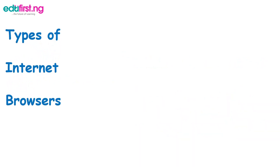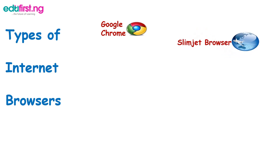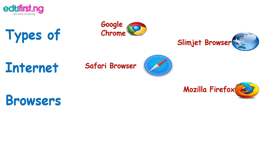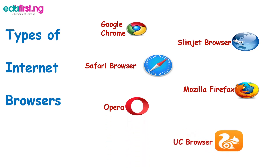We have types of Internet Browsers. We have Google Chrome, Slim Jets, Safari, Mozilla Firefox which is very popular, Opera, and UC Browser — UC stands for Universal Control Browser, which emanated from China. We also have Internet Explorer. There are a lot of them, and these are the software that helps you appreciate the importance of the Internet.